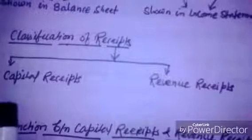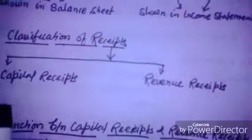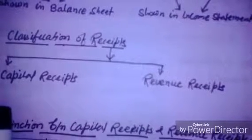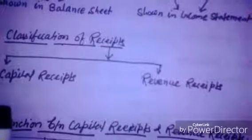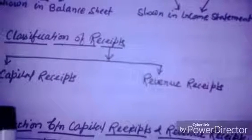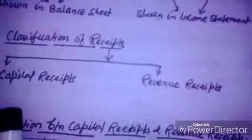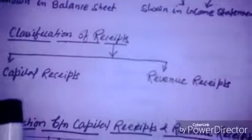Further examples of capital receipts include: sixth, compensation on premature termination of an agreement; seventh, receipt of proceeds on a LIC policy at its maturity; eighth, insurance money received up to the original cost of assets destroyed in an accident; ninth, sales of fixed assets; tenth, profit on sales of technical know-how; and eleventh, life membership fees and legacy received in a non-profit organization.